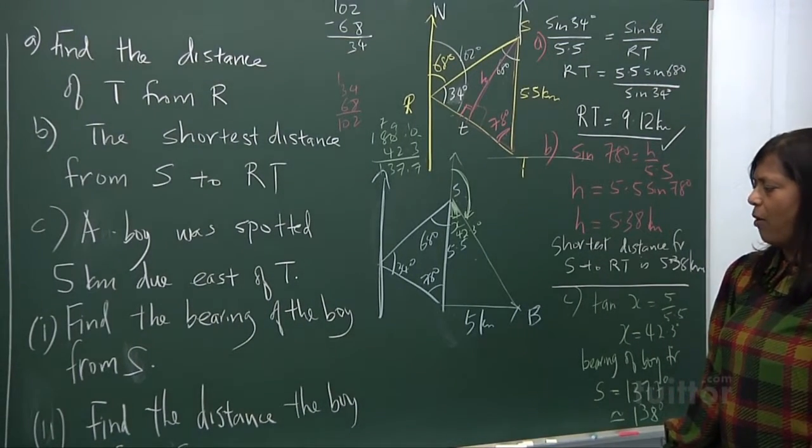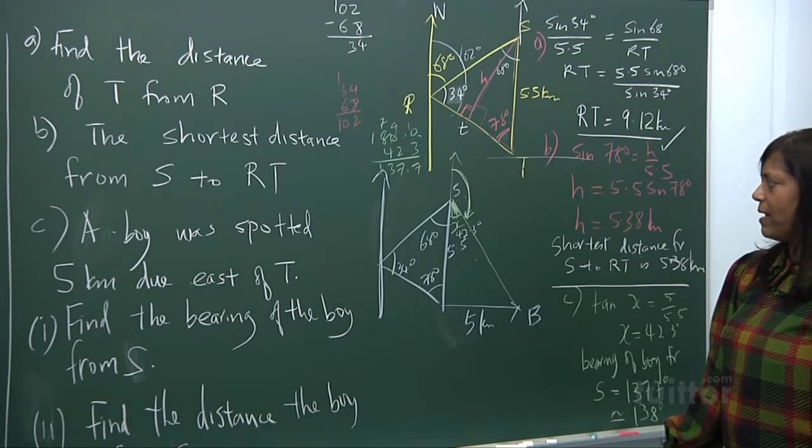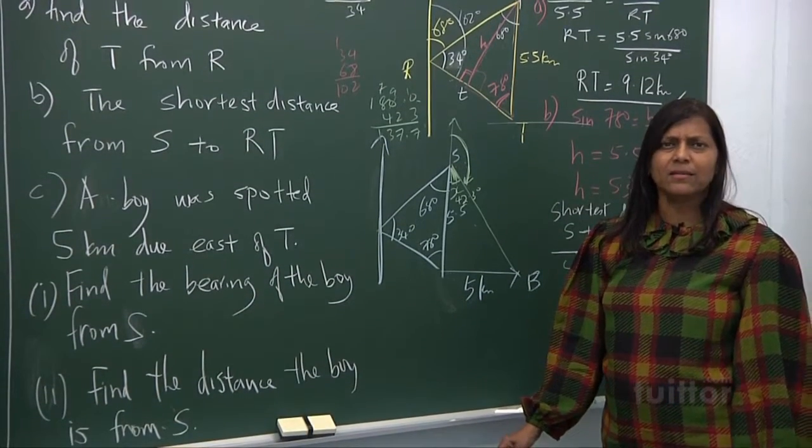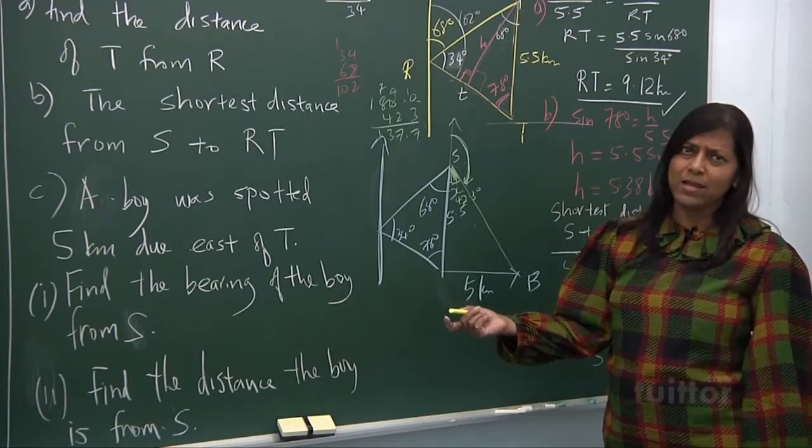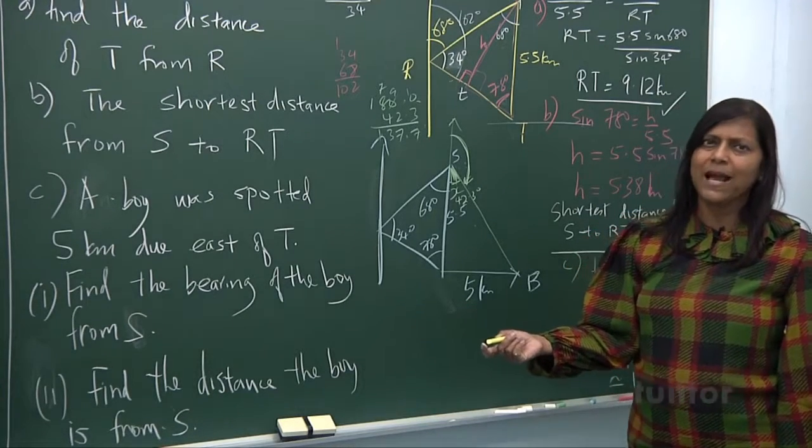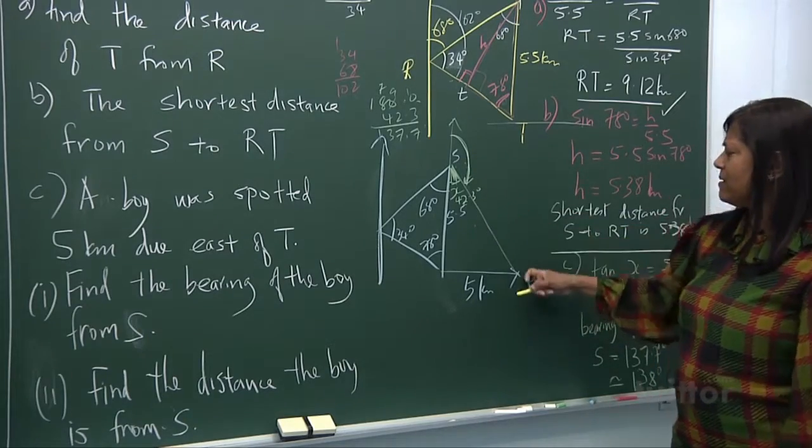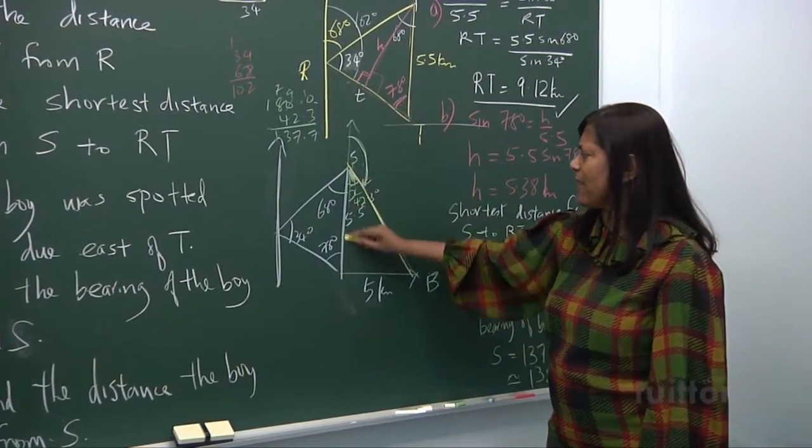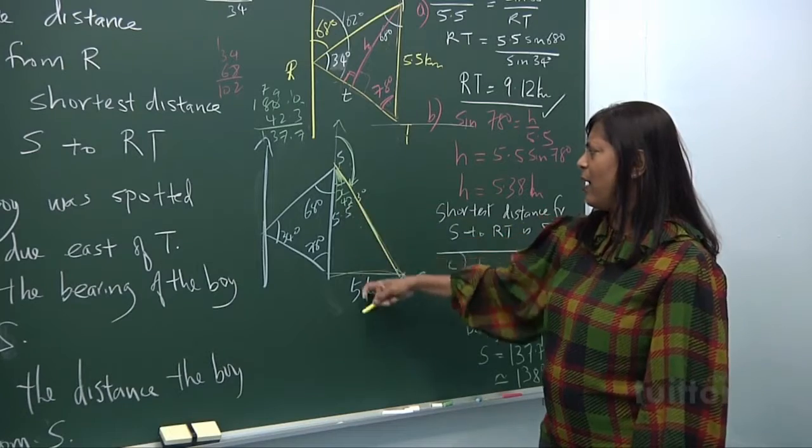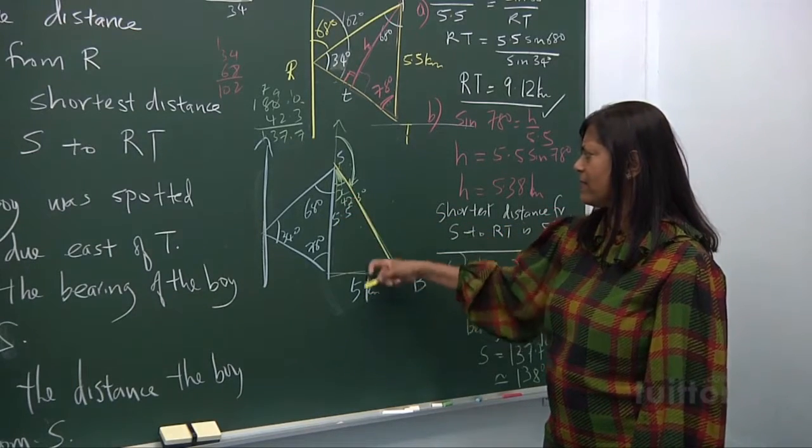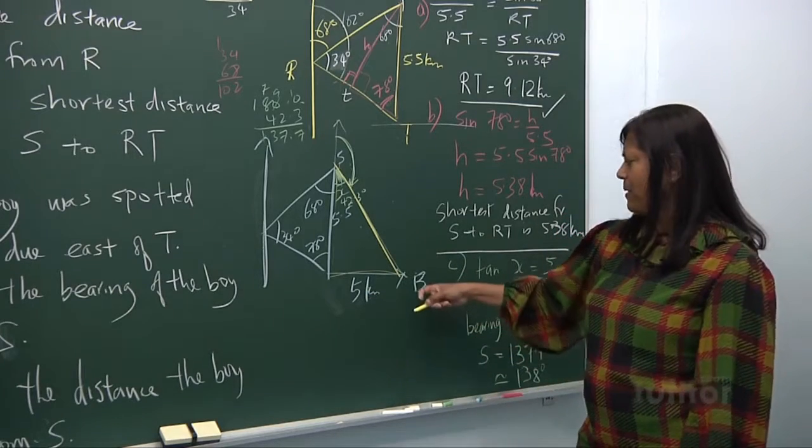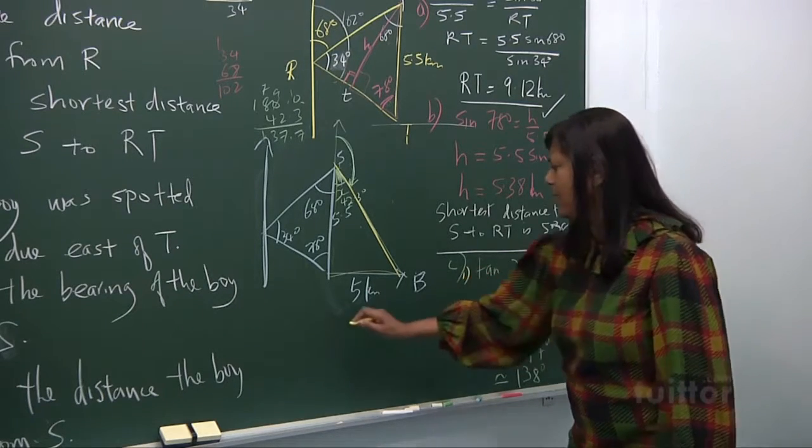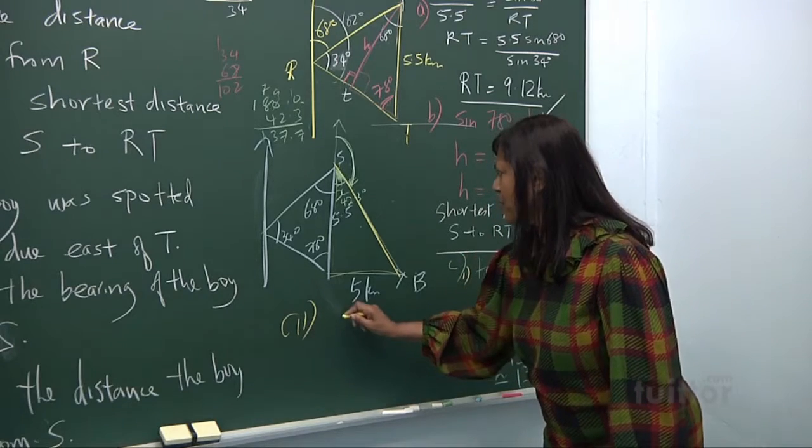Now find the distance the boy is from S. Once you have a diagram, a diagram is worth a thousand words, they say. How true it is. Without the diagram, you will be kind of lost. Now you want to find the distance the boy from S, this whole thing. There are many ways of doing it. Number one, you can use Pythagoras theorem. Number two, you can use your angle. You can use sine. Sine of this is opposite over SB. We put the boy as B. So this distance, this is C part 1, C part 2. We want to use Pythagoras theorem.